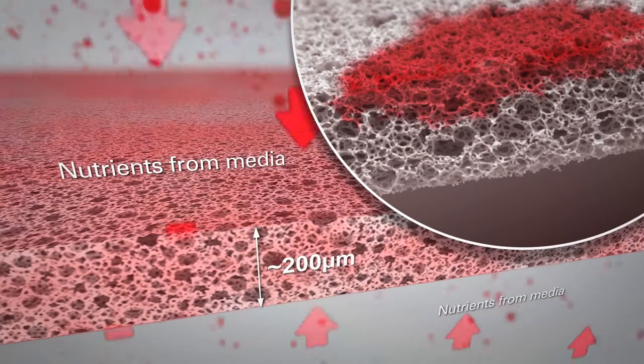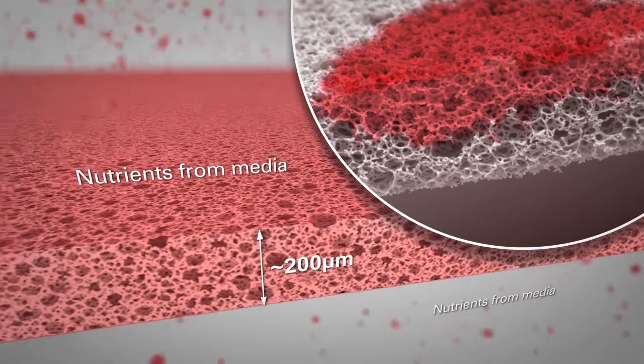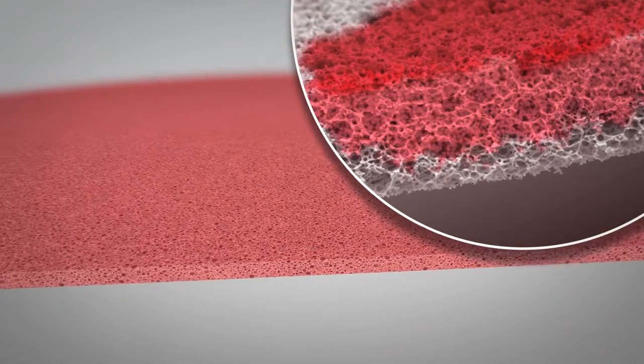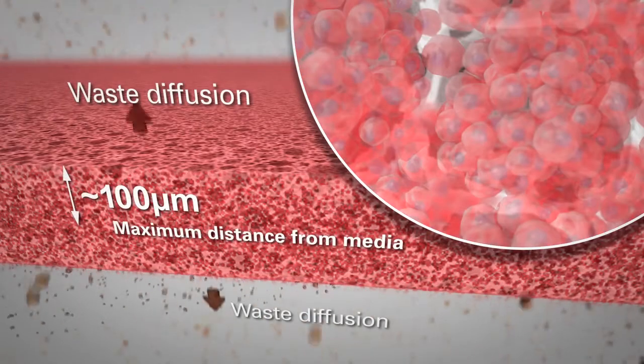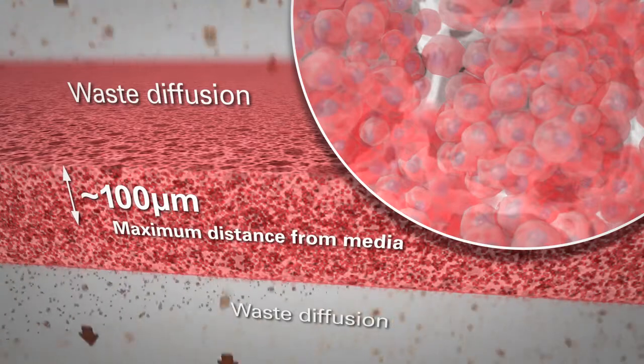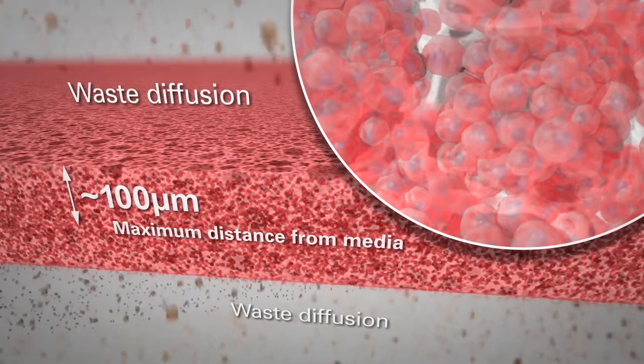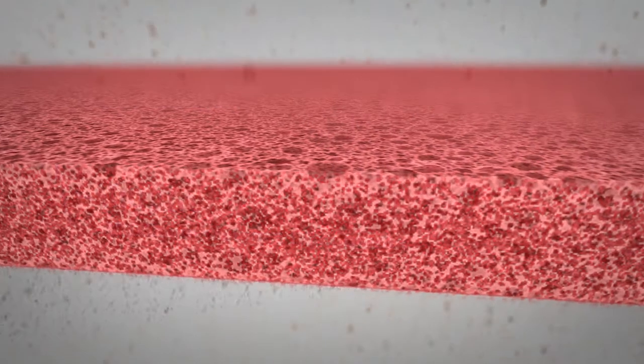The stable inert substrate has a depth of only 200 microns, enabling efficient diffusion throughout the membrane. Cells in Alvatec Scaffold are no more than 100 microns from media, enabling access to nutrients and removal of waste products to occur naturally by passive diffusion.